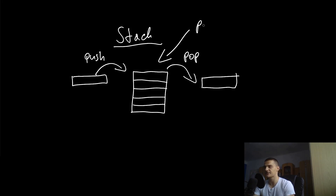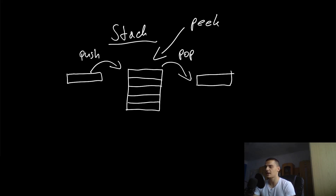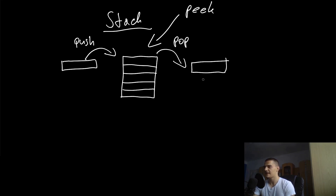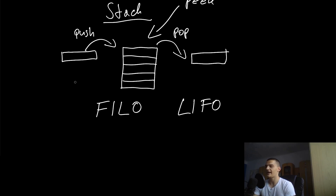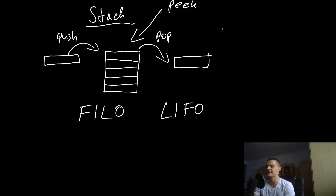We can also peek at the stack — I believe it's spelled 'peek' with two e's, not 'peak' which refers to the top point of something. So the operations are: push data on top, pop the last element out of the stack, and peek. This means that a stack operates on a so-called first in last out, or last in first out, principle — FILO or LIFO.